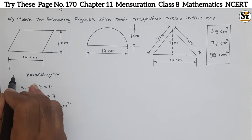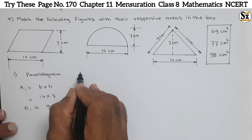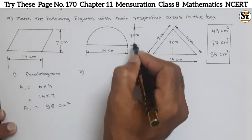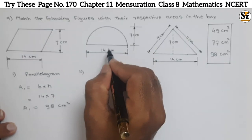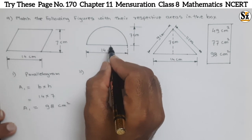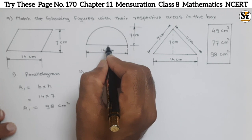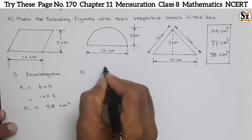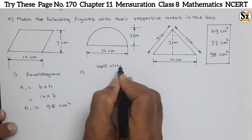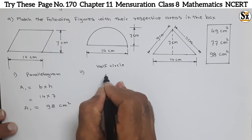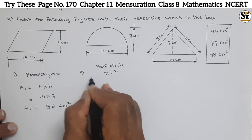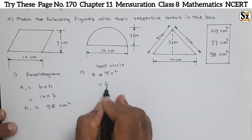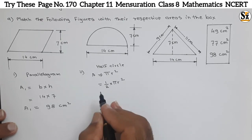For the second figure, it is a complete half circle. It is a complete half circle because the diameter is given as 14 centimeters and the height is also 7 centimeters — half of the diameter 14 is 7 centimeters, which equals the height, confirming this is a complete half circle. The area of a full circle is π r², but since this is a half circle, the area will be ½ × π r².